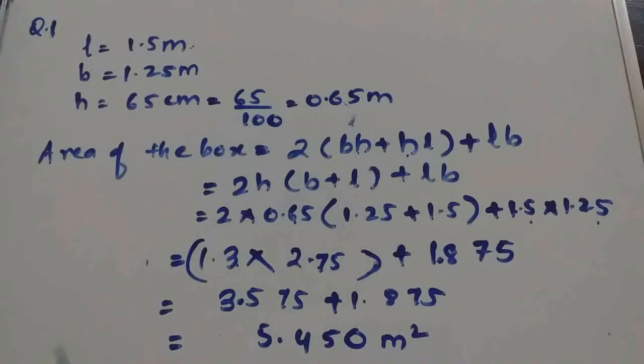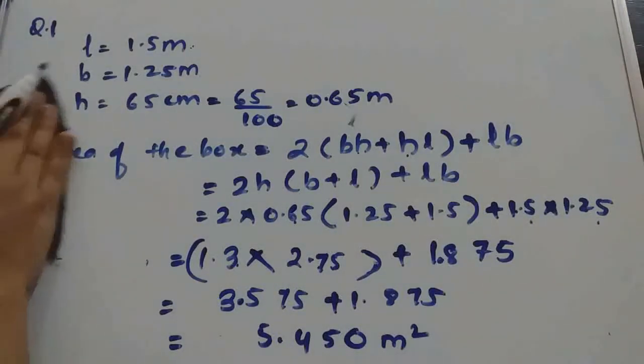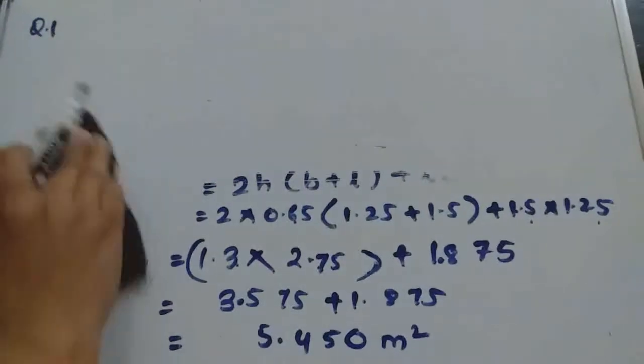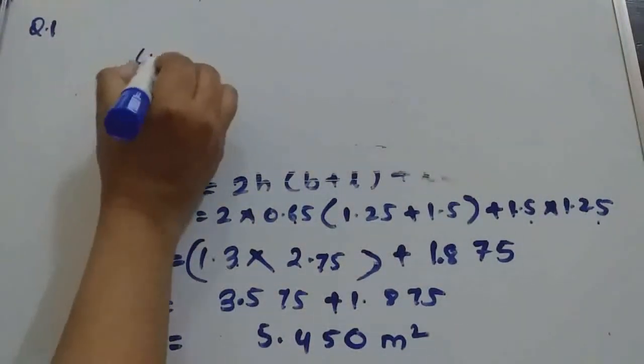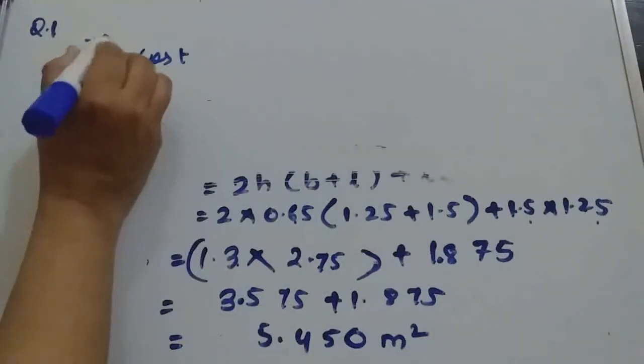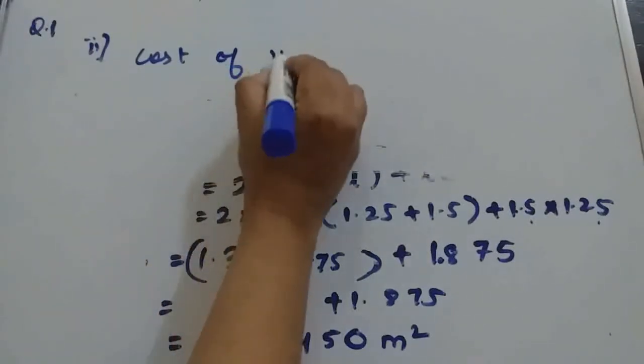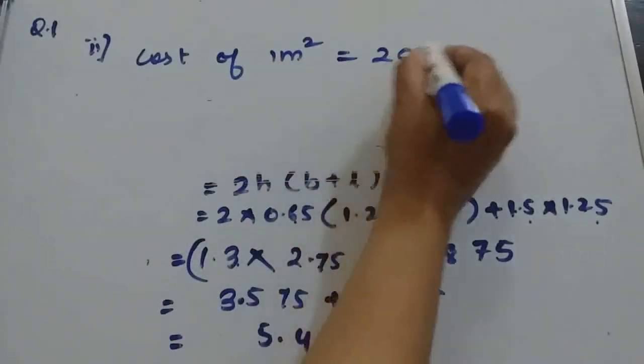Now this is the first part of the question. For the second part of the question, the cost of sheet for it: if a sheet measuring 1 square meter costs 20 rupees, that means cost of 1 square meter is 20 rupees.